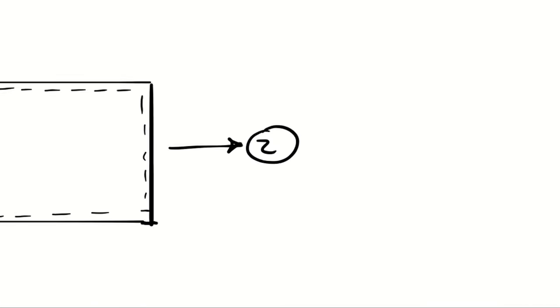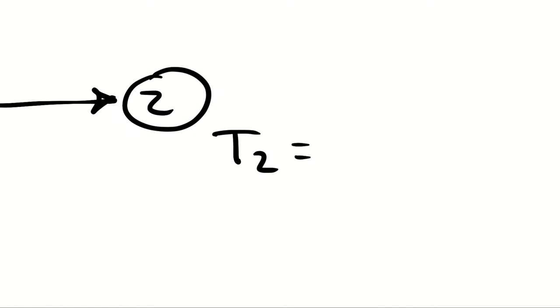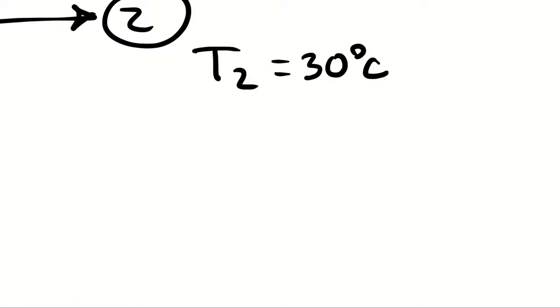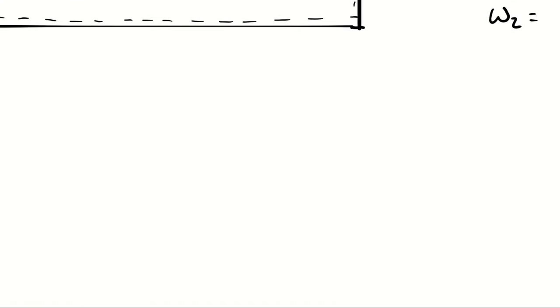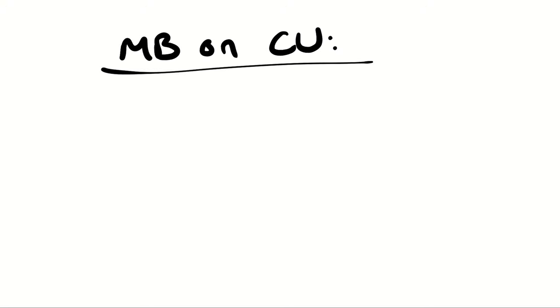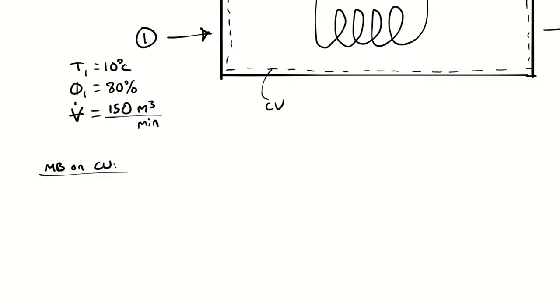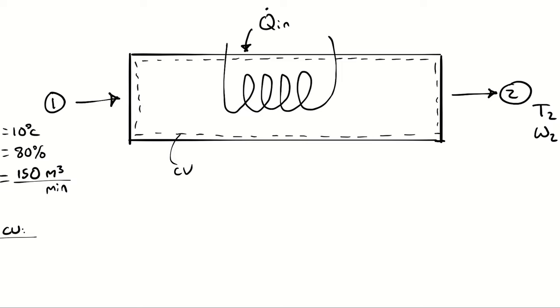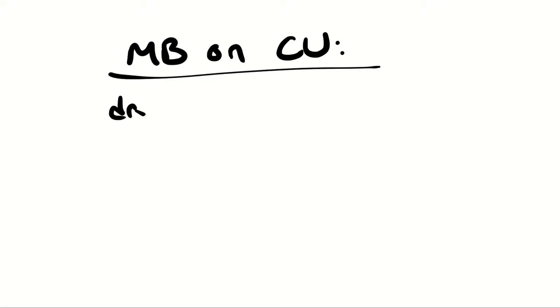At state 2, I know that the temperature is 30 degrees Celsius. I need two independent intensive psychrometric properties to fully define my state point, from which I can look up anything else. The other property comes from our mass balance. Just like in the adiabatic saturation chamber, I can set up a mass balance on the dry air, the water vapor, or the atmospheric air as a whole. The atmospheric air balance, generally speaking, isn't very useful.